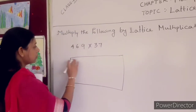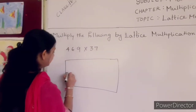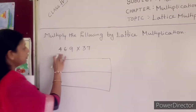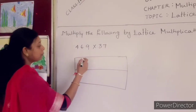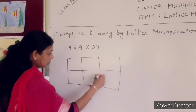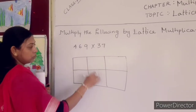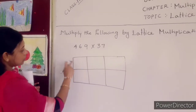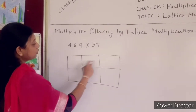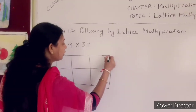First you have to draw the box in this way. After that you cut this one in the middle. Here are 3 distinct numbers, so you have to draw 1, 2, 3, 4, 5, 6 boxes. After that you cut this one diagonally.